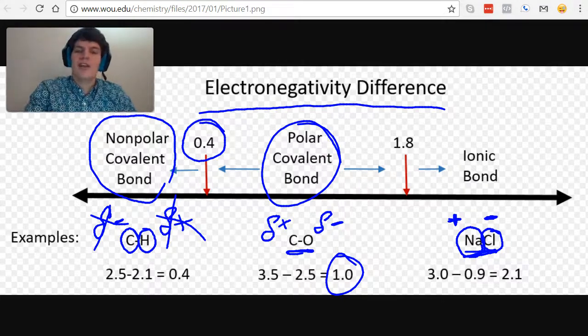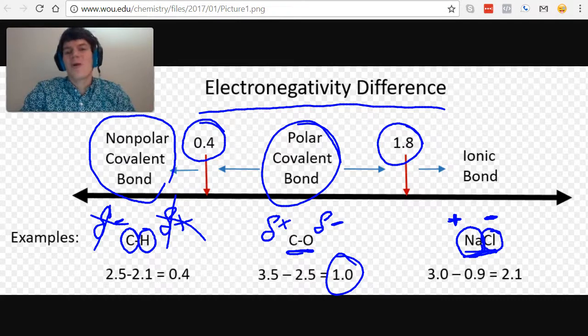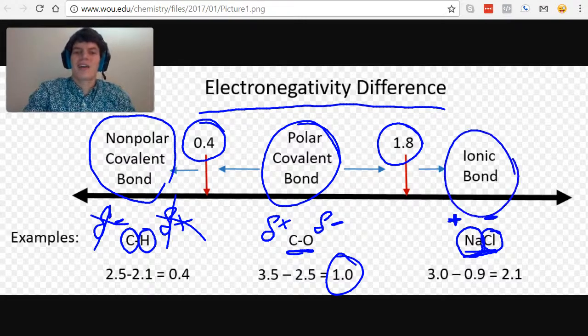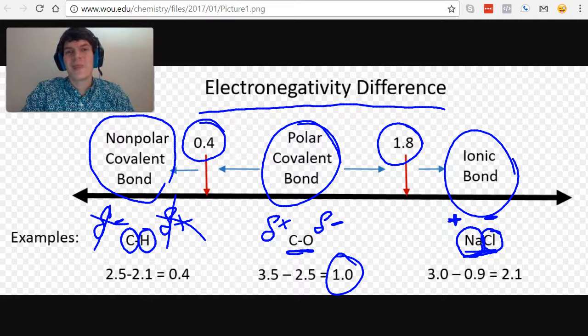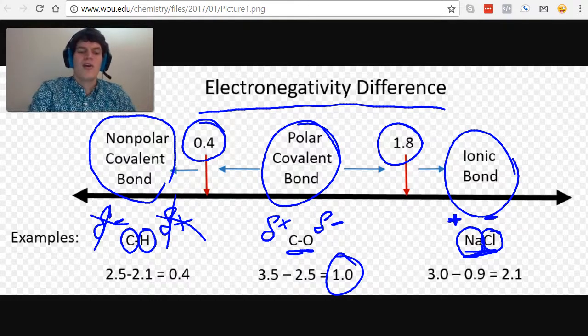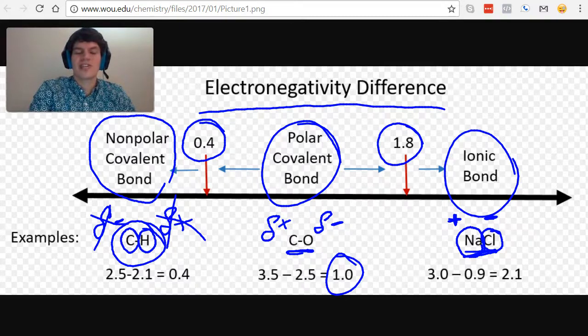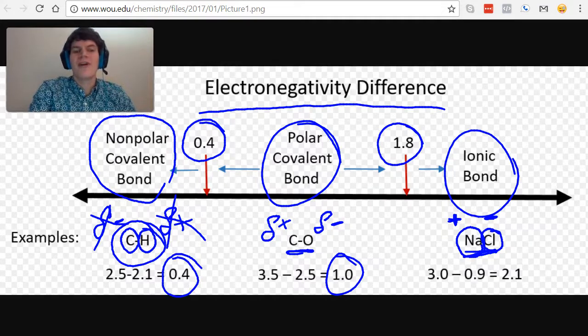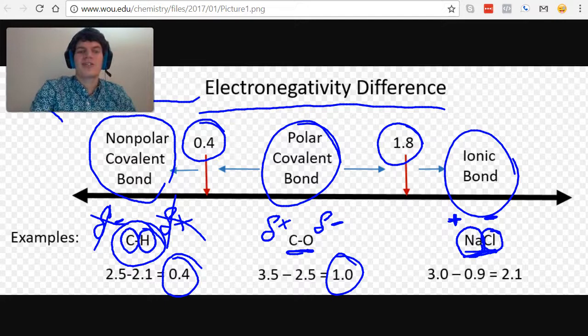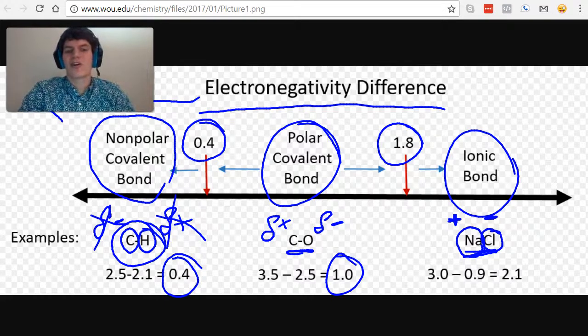And then once you get above an electronegativity difference of 1.8, we consider those to be an ionic bond. And if you recall correctly, in this practice problem we're asked about carbon and hydrogen, which have an electronegativity difference of 0.4, therefore we consider them on this side of the spectrum, considering them to be nonpolar covalent bonds.